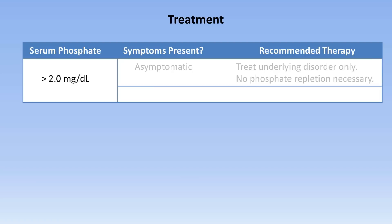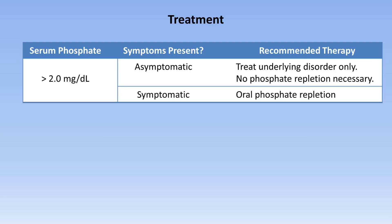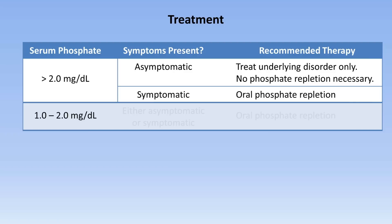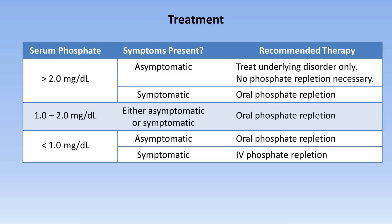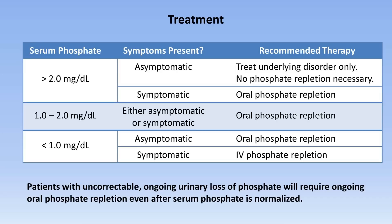Decisions about treatment depend upon how low the serum phosphate is and whether or not symptoms are present. For a phosphate level above 2 mg per deciliter in an asymptomatic patient, you should only treat the underlying disorder; phosphate repletion is generally not necessary. If symptoms are present, however, oral repletion would be appropriate. For a serum phosphate between 1 and 2, regardless of symptoms, oral repletion is appropriate. For a level under 1, oral repletion if asymptomatic and IV repletion if symptomatic. Keep in mind, for patients with uncorrectable ongoing urinary losses of phosphate, they will require ongoing oral phosphate repletion even after the serum phosphate is normalized.